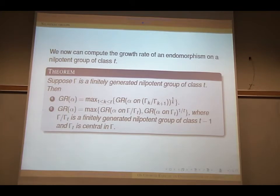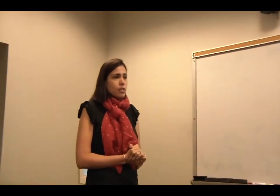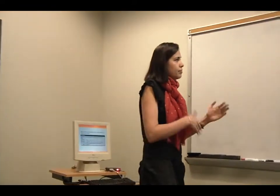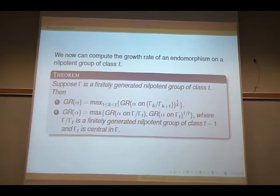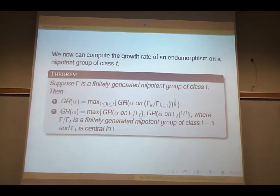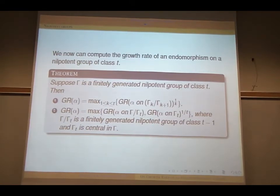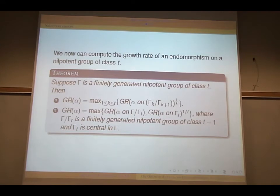This is an interesting result due to Bowen on how to compute the growth rate of a finite nilpotent group. The proof is very complex, using several results on growth rates, including the growth rates of polycyclic groups by Wolff and Milner and so on. The proof is very complex.